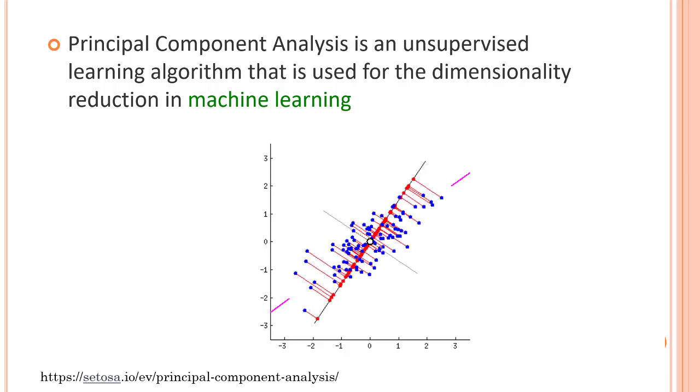The basic principle of what PCA is: we first identify the hyperplane that lies closest to the data, and then it projects the data onto it. Now hyperplane and all of these stuff might make your head blow, so let me shorten it out.